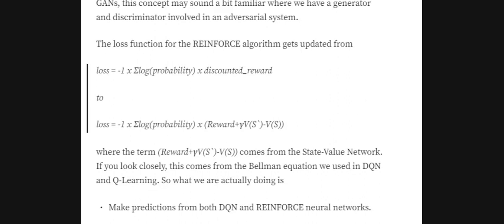The loss function used in REINFORCE was: minus one times the summation of log probability times discounted rewards. In the Actor-Critic method, the loss function for the policy network becomes: minus one times the summation of log probability times (reward plus gamma times the Q-value of the future state minus the Q-value of the current state). The discounted reward term is replaced by this new term, where Q-values for the future and current states are provided by the DQN (the Critic) — very similar to the Bellman equation.